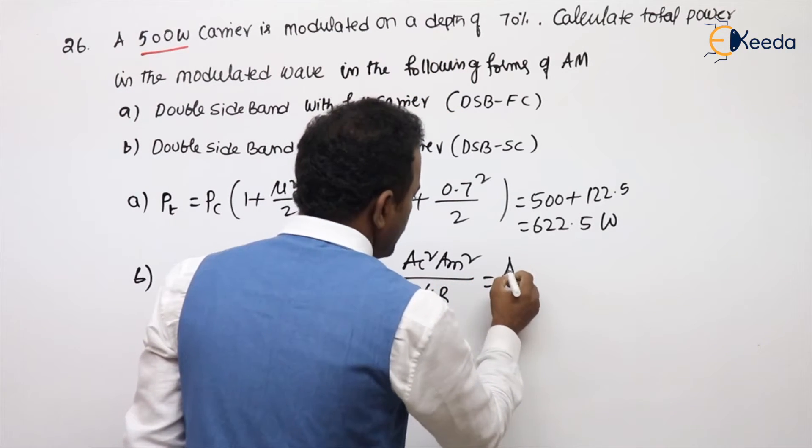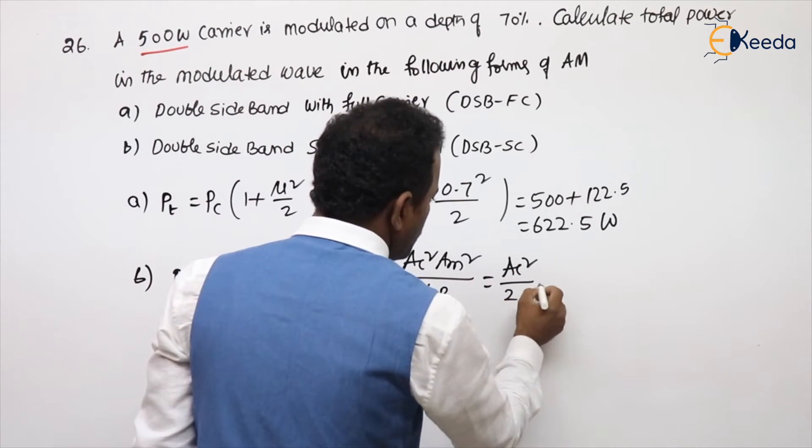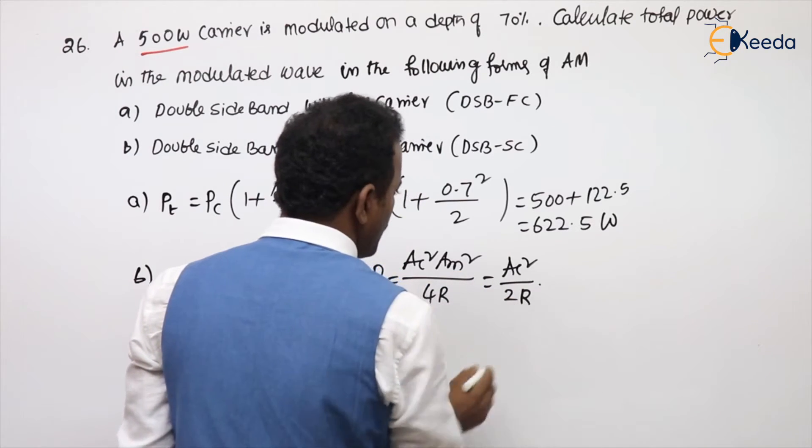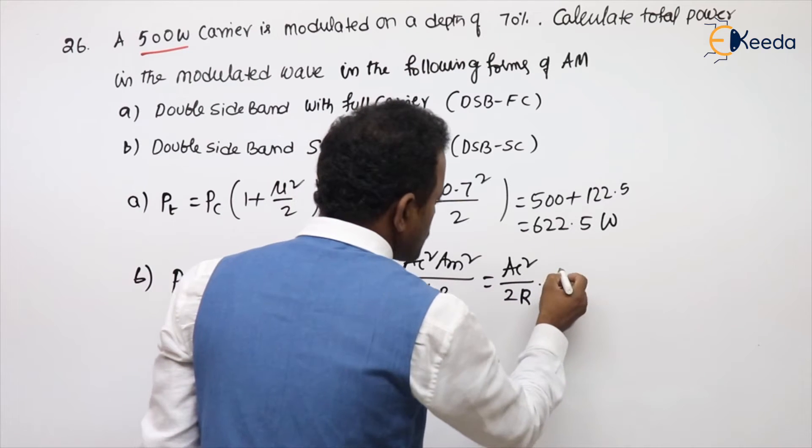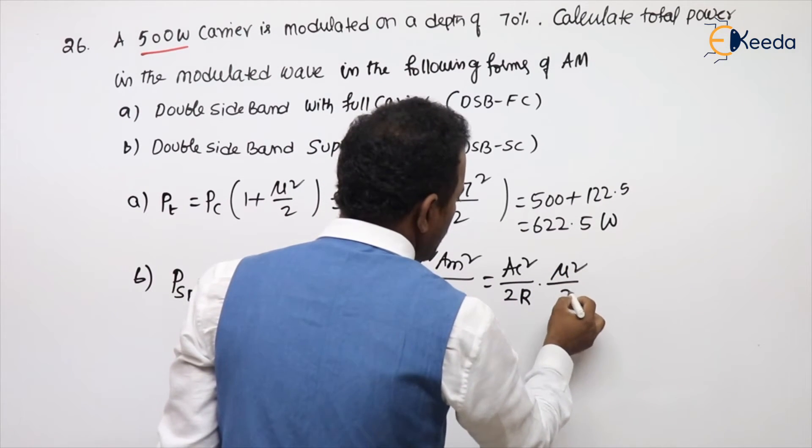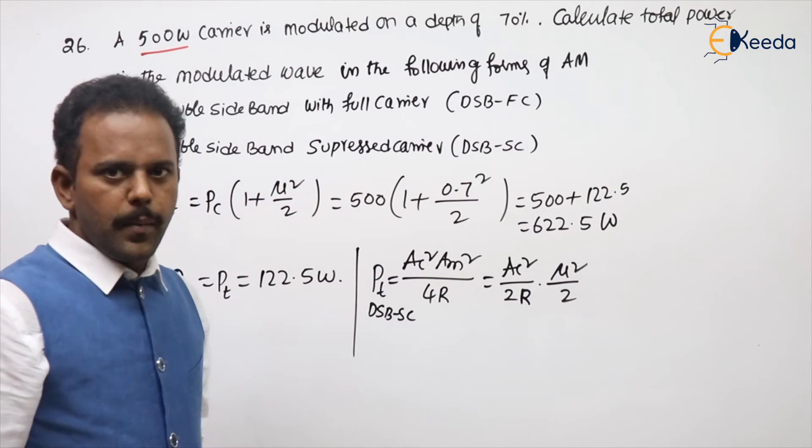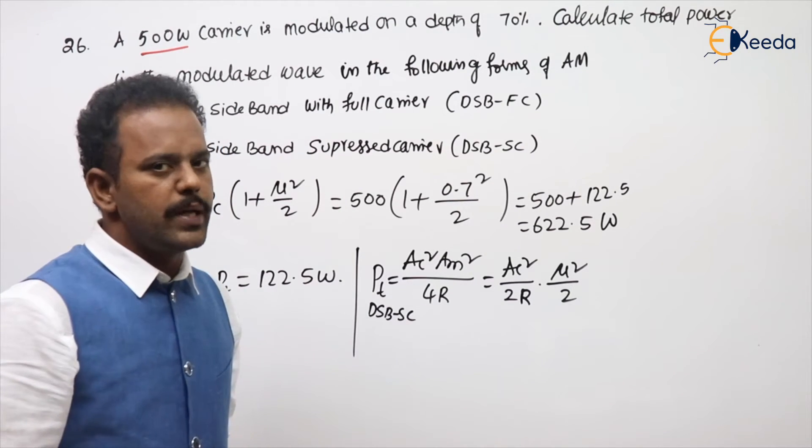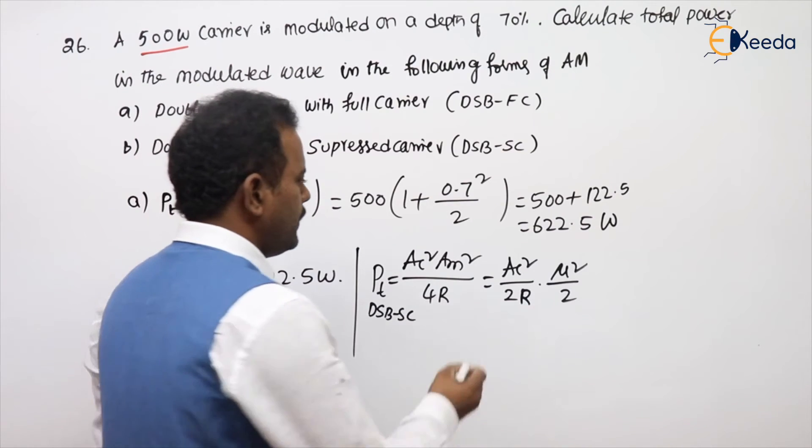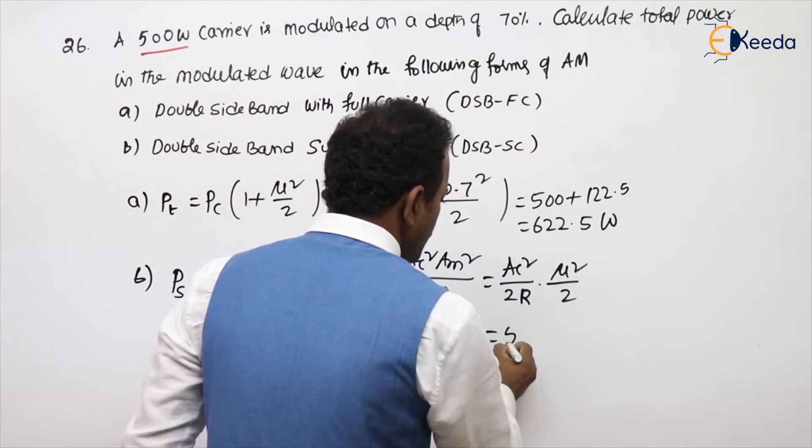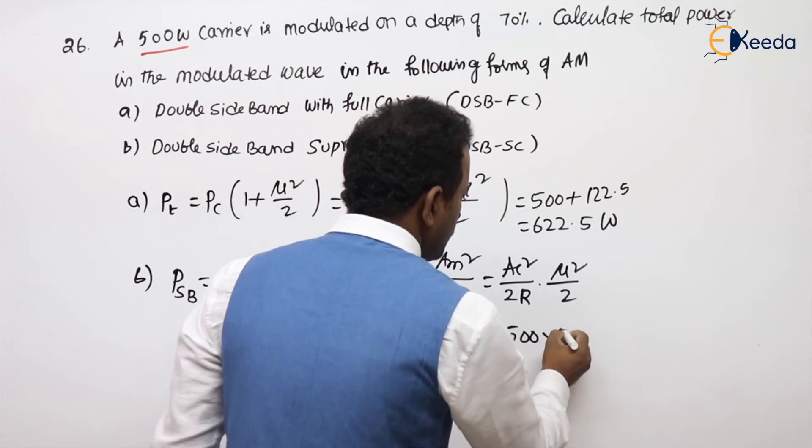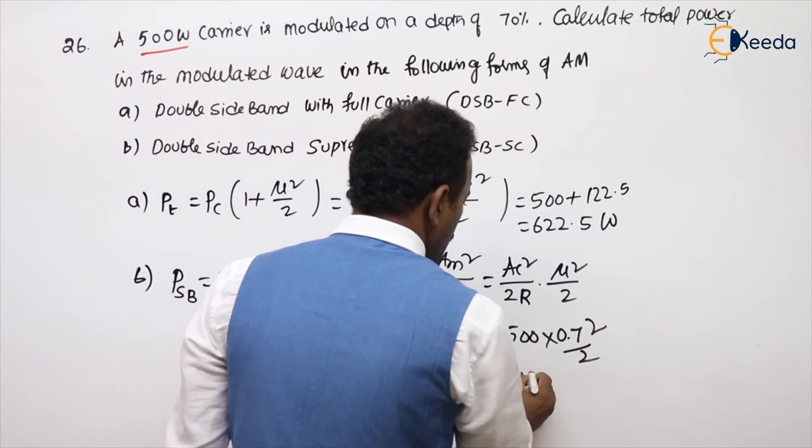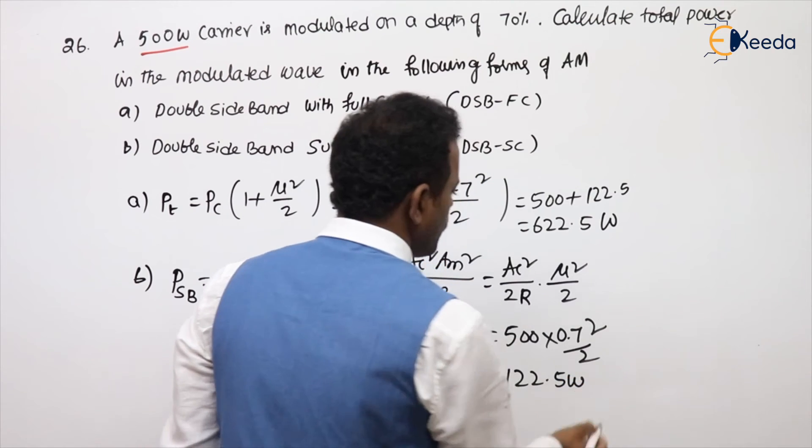It can be written as AC square by 2 into AM square by 2, remaining R is 1. AM square by 2 is also mu square by 2 you can write. Because mu equal to KA AM, KA value 1 in DSBFC. Substitute there, PC 500 into 0.7 whole square by 2. Still you will get 122.5 watts only.